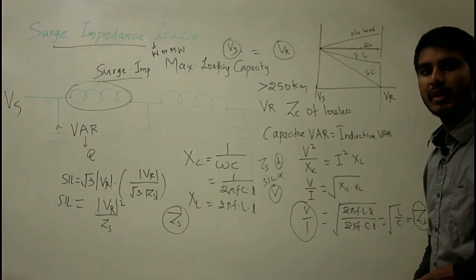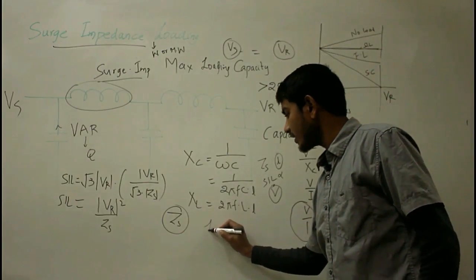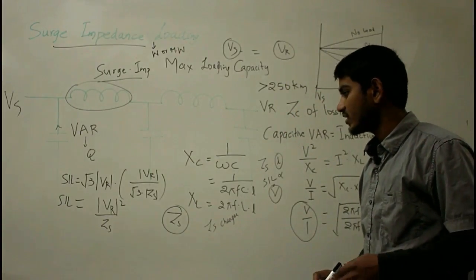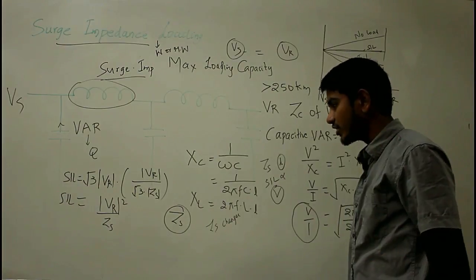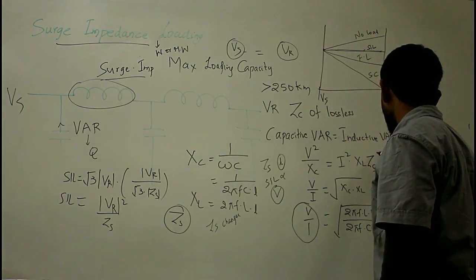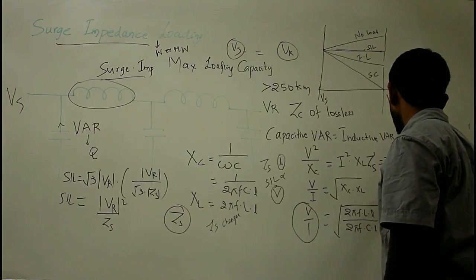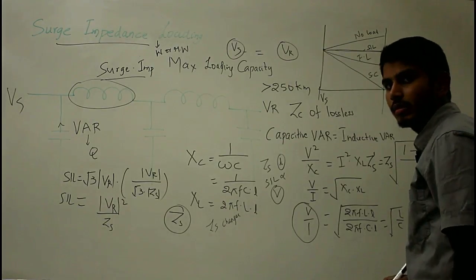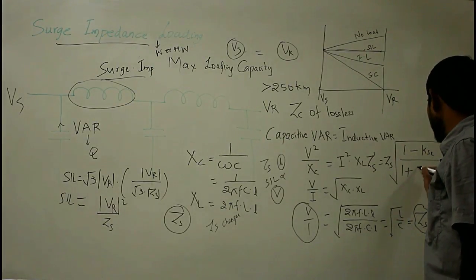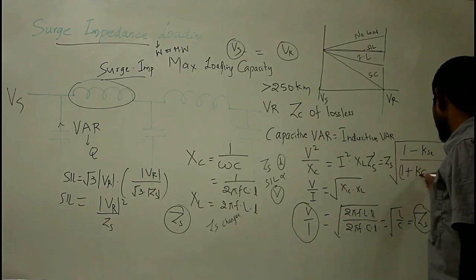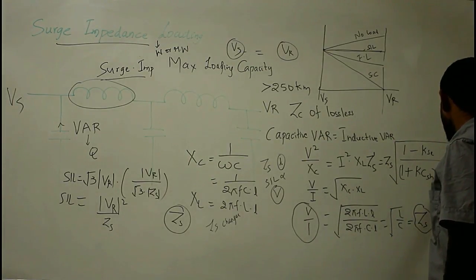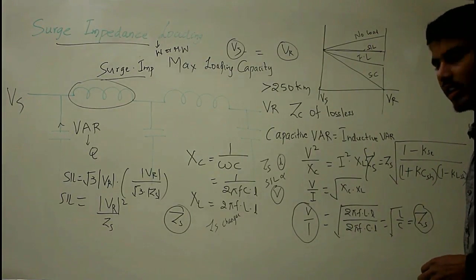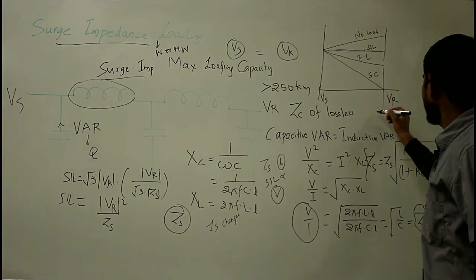When we go to a compensated line, the value of ZS changes. For a compensated line, the new value is: ZS' = ZS × √((1 − ksc) / ((1 + kch) × (1 − klsh))). This is the new value of ZS' for a compensated line.